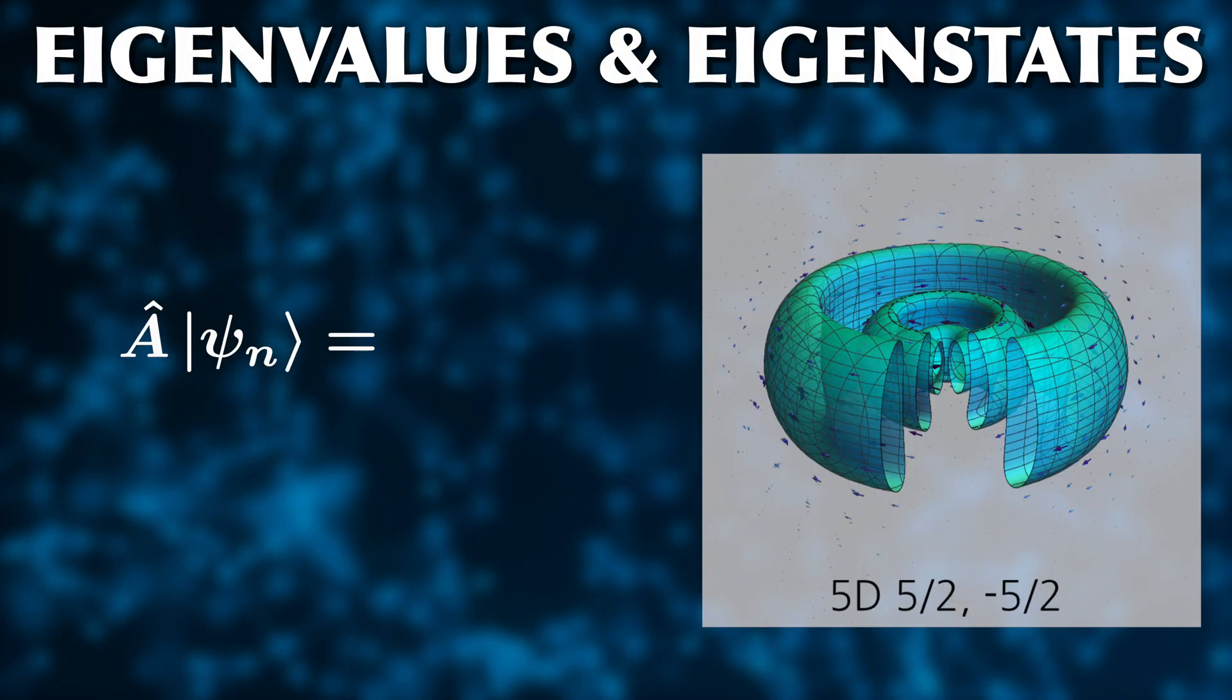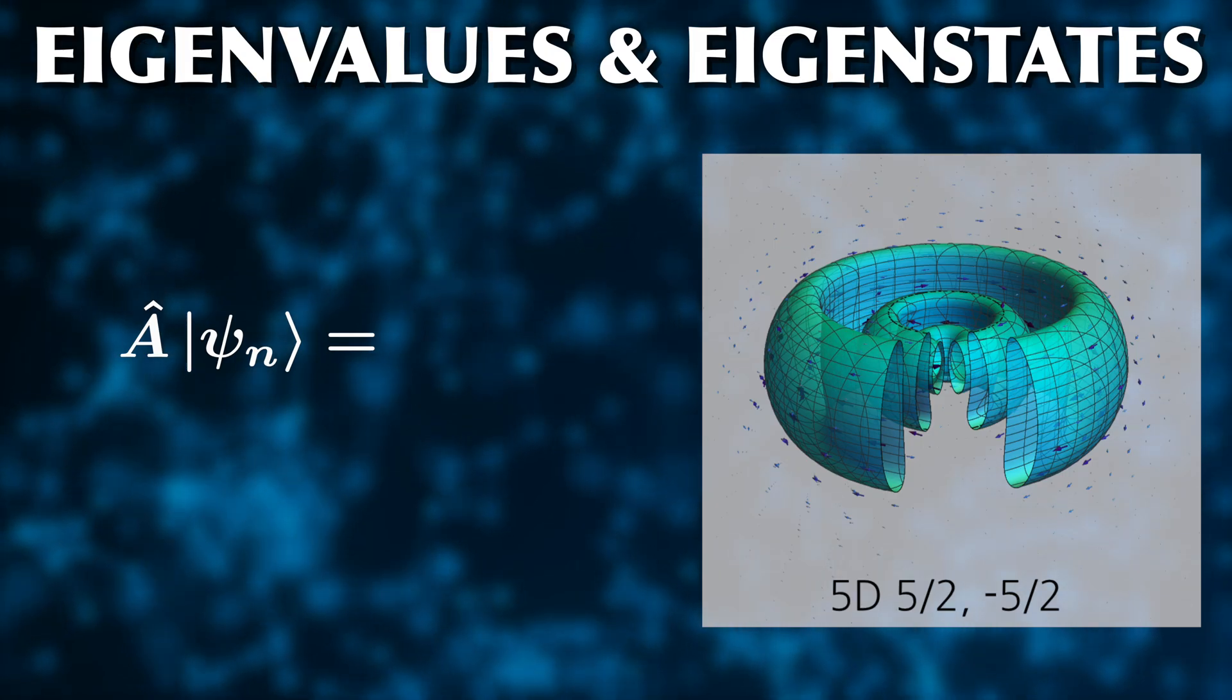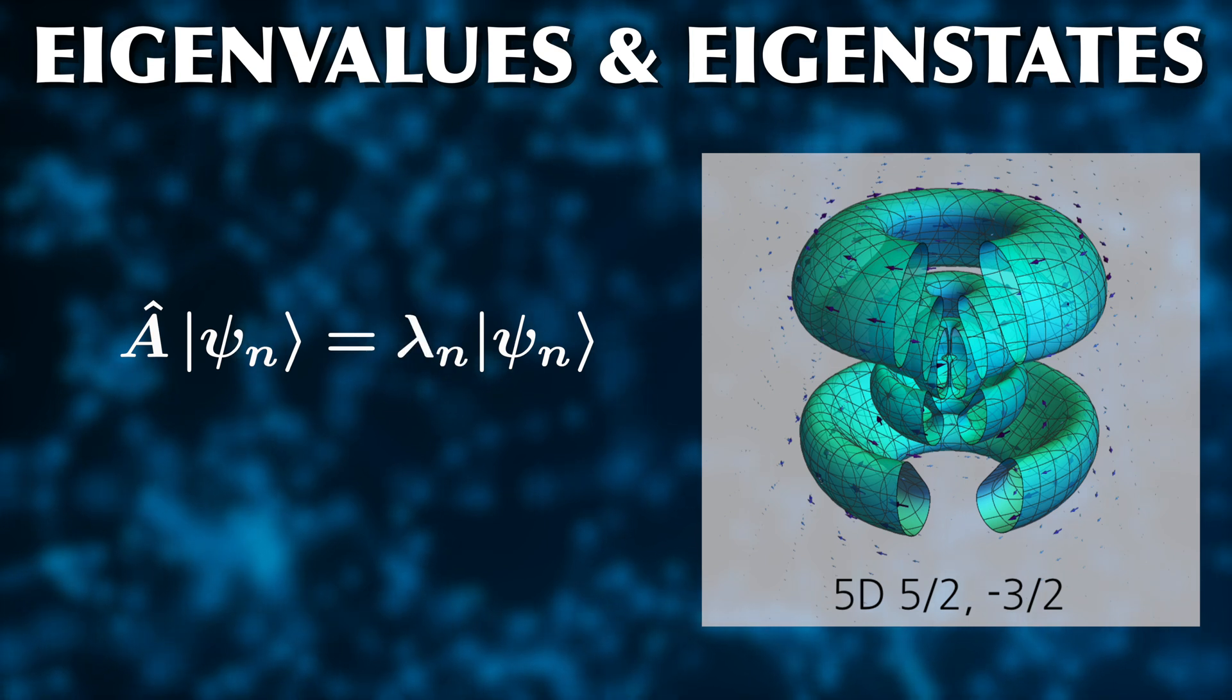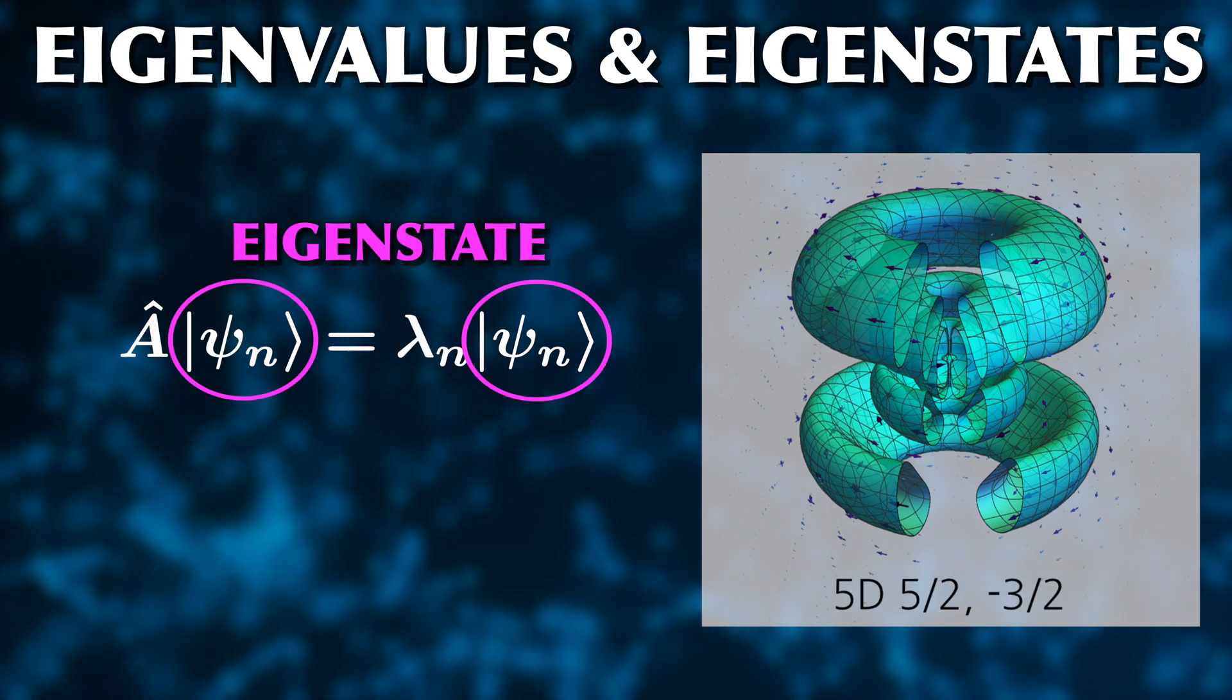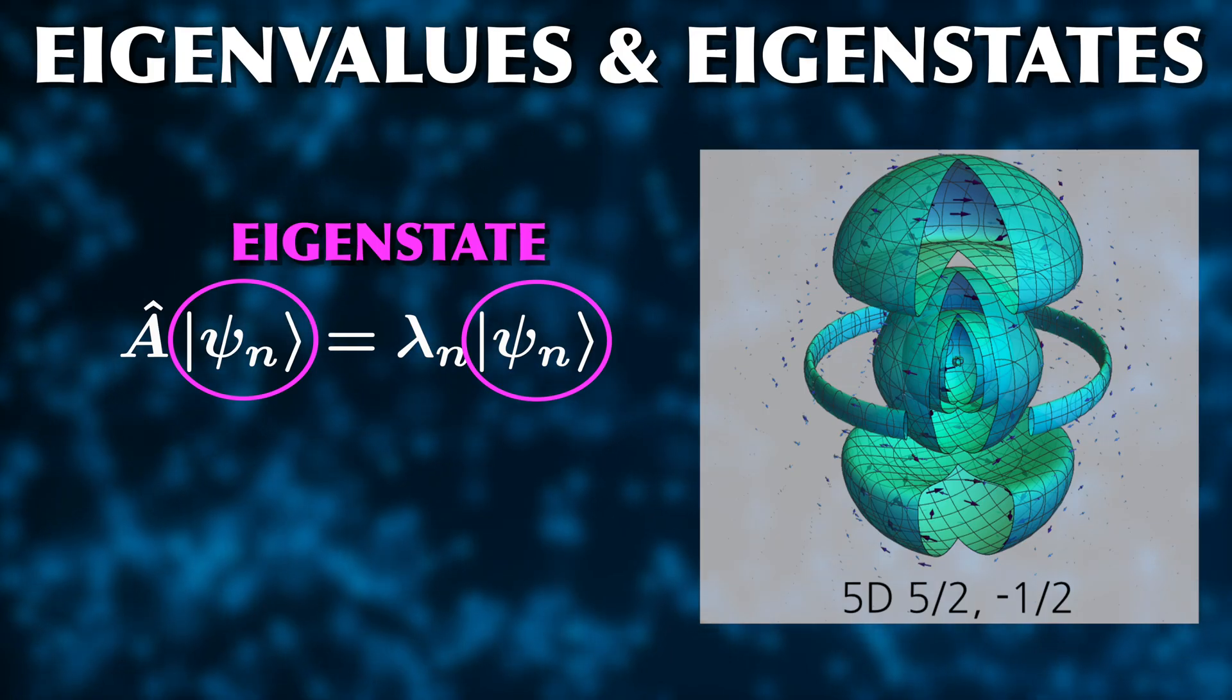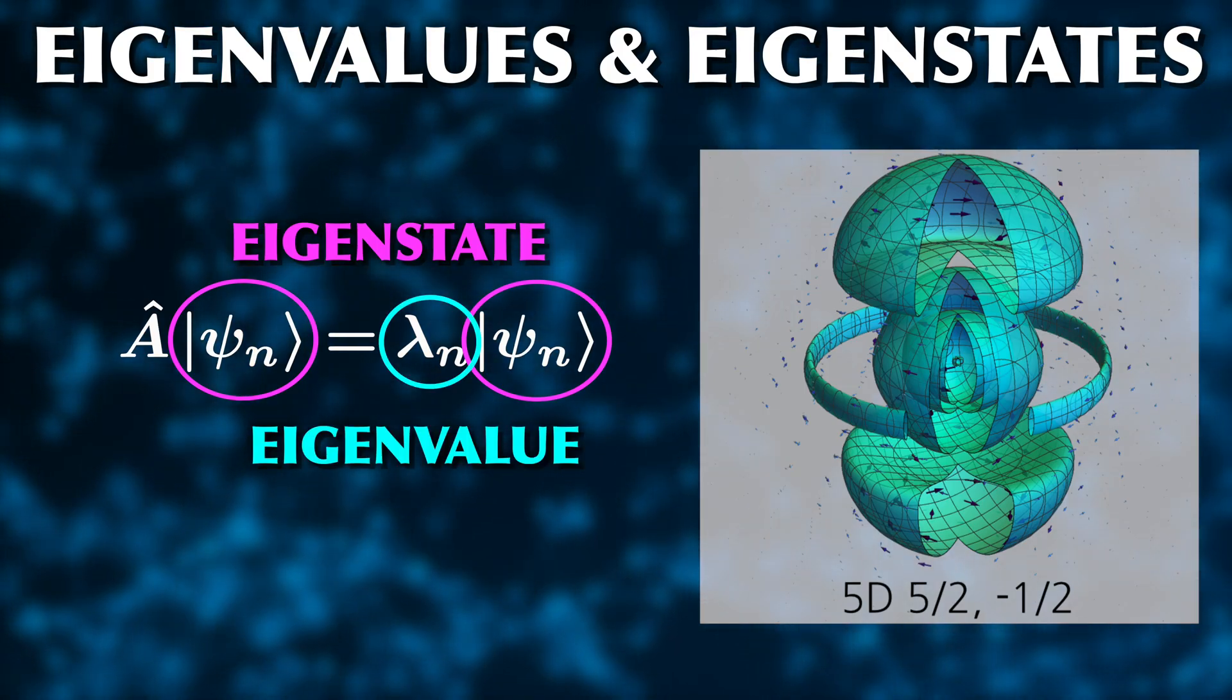The connection between these operators and our measurements is that the only possible measurement outcomes we can get are the eigenvalues of these operators. What are eigenvalues? There are specific states that are unchanged by an operator, so the operator acting on them just reproduces the same state, just with a numerical factor. These states are the eigenstates of the operator, and those numerical values are its eigenvalues, the possible measurement results for this observable.